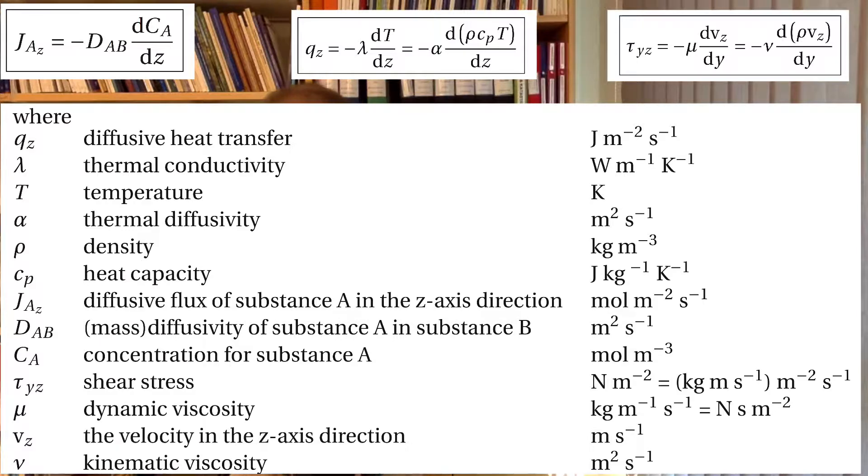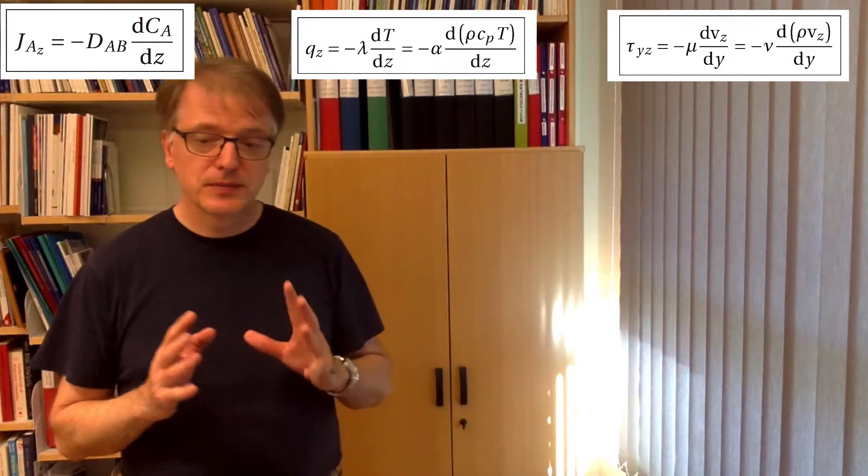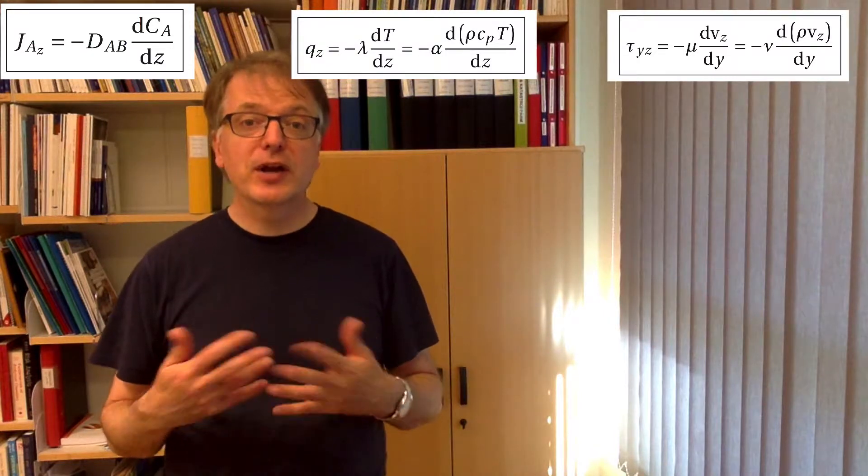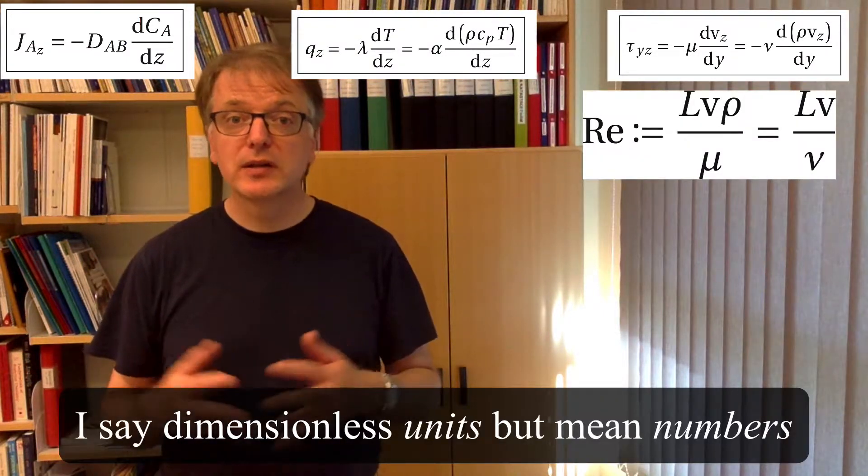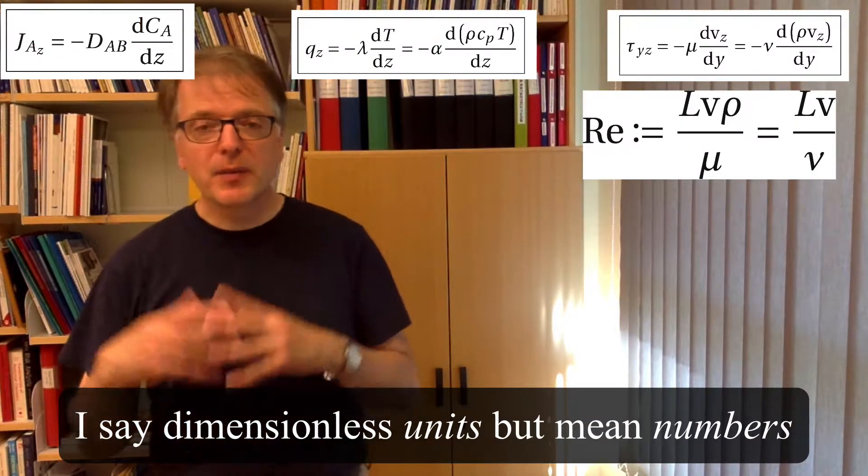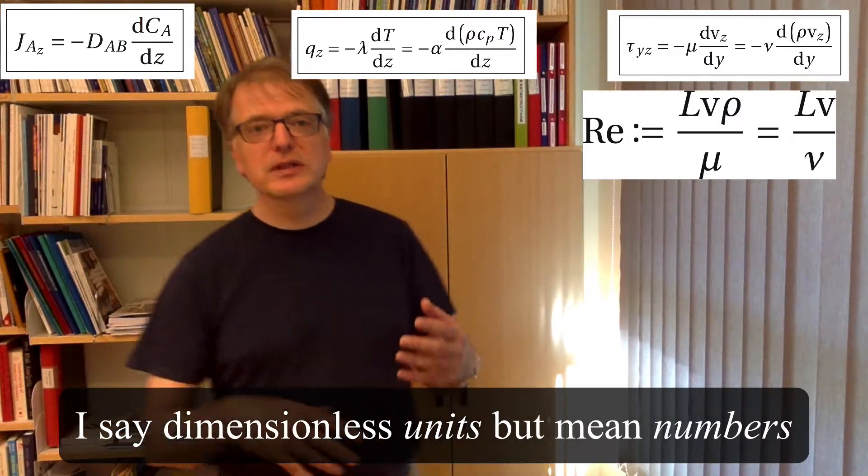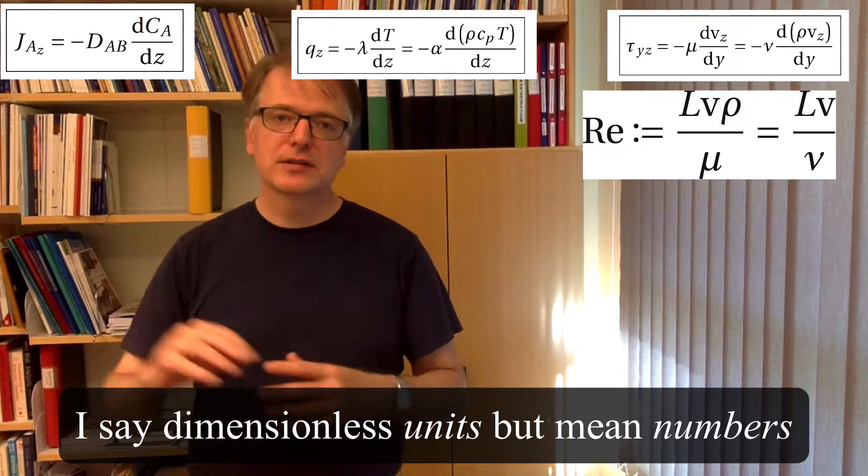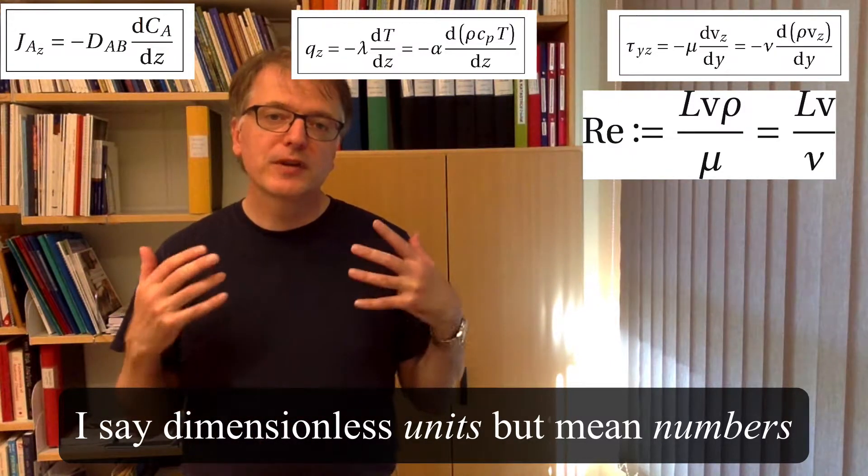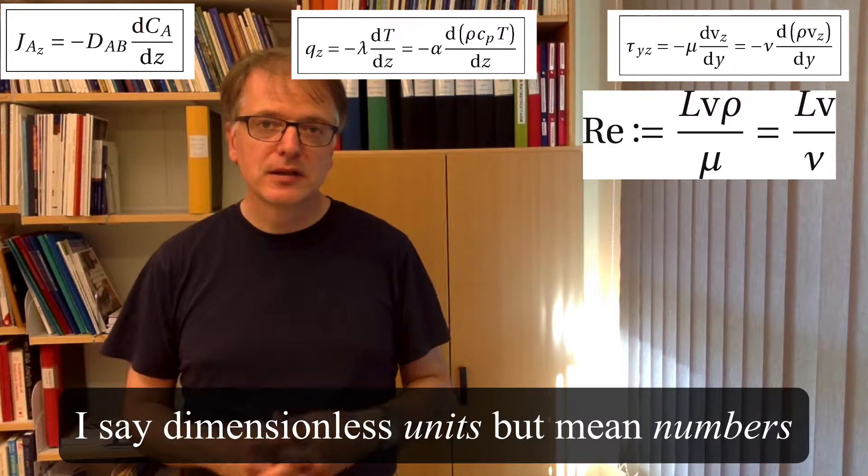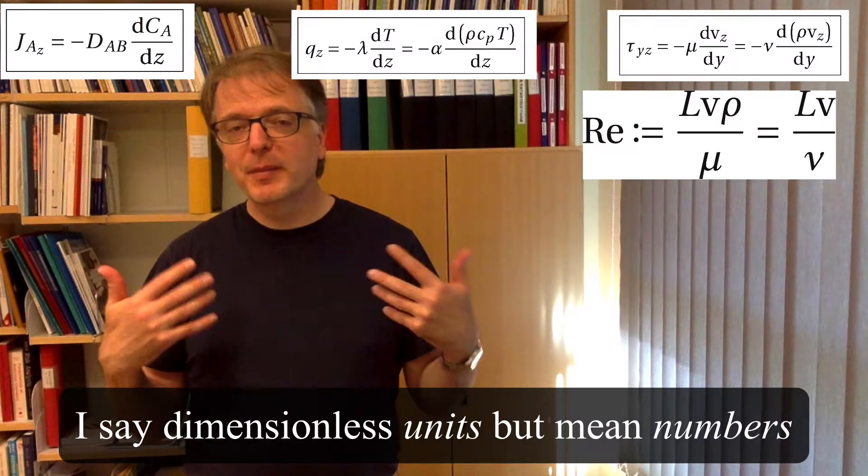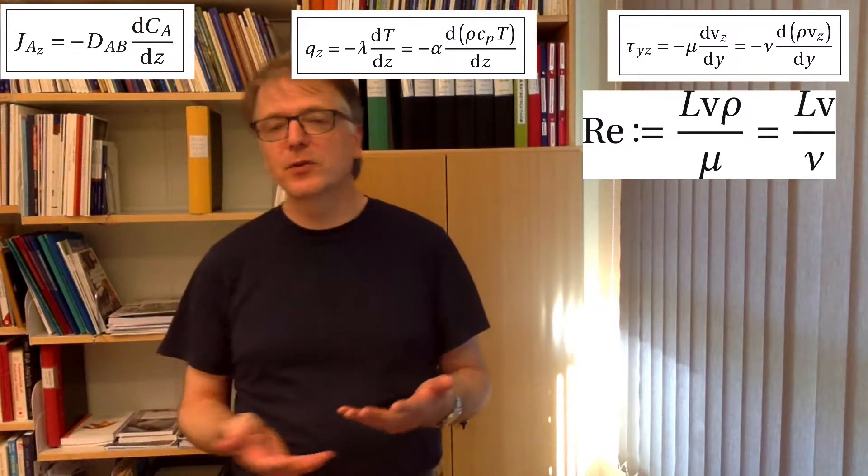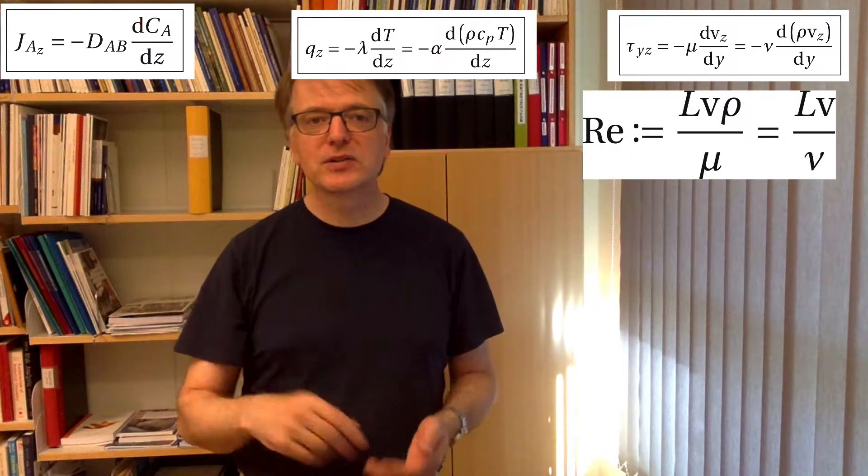We will now turn to dimensionless groups or dimensionless numbers. You might have heard of the Reynolds number before, which is one dimensionless unit. And dimensionless units are good because they can tell us things about the relation between different things. With dimensionless numbers, we don't need to care if you measured something in centimeters or inches.